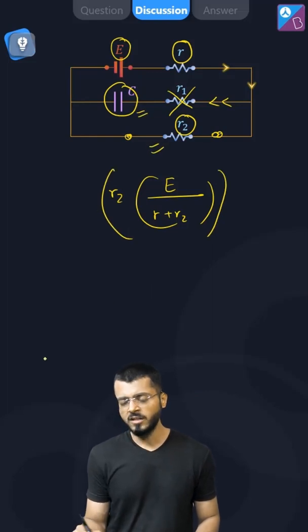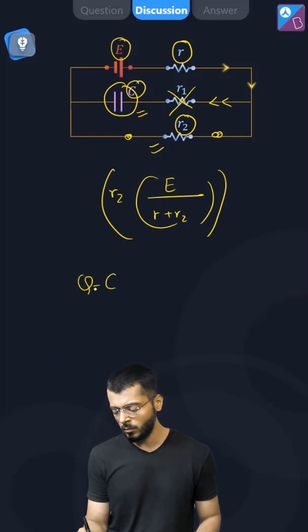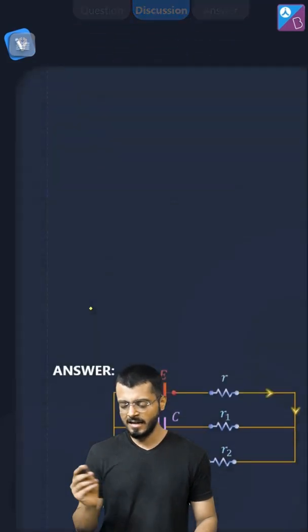So what is the value, potential difference is this much, capacitance is this much, Q is equals to C into E. We just have to multiply this one and we'll get the value of capacitance. Here is the answer.